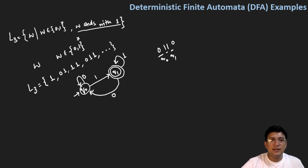So let's check whether all these symbols and strings will be accepted or not. For example one one, so from q0 on one we move to q1 and again on one we remain at q1 and this is the final state.